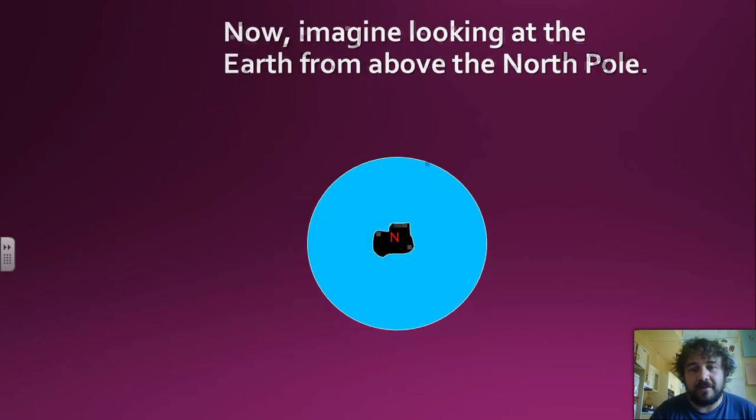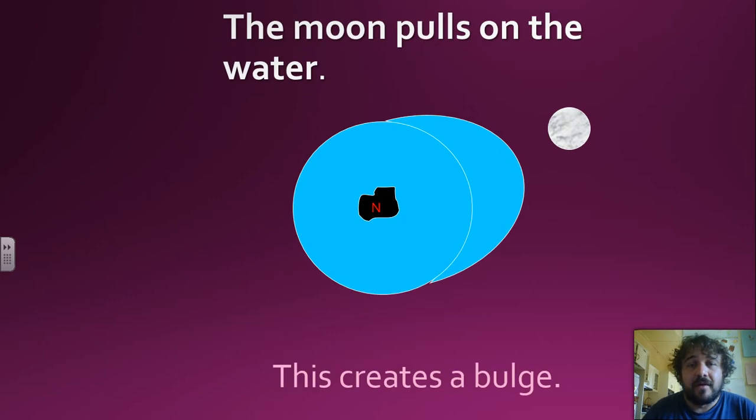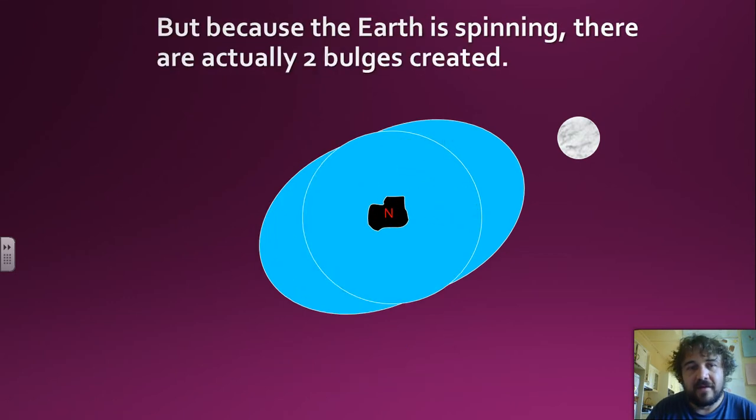So, nothing on the Earth but water. We're looking at the Earth from the North Pole. Let's add a Moon. So the Moon pulls on water and that creates a bulge. Obviously the bulge is not as big as this, but it's just to show effect. But because the Earth is spinning, it evens out and you get two bulges, which is pretty cool.